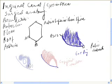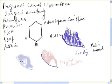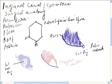The posterior boundary is formed by the transversalis fascia, and there is an opening known as the internal ring. This internal ring, also called the deep ring, is located midway between the anterior superior iliac spine and the pubic tubercle. Behind the transversalis fascia, more posteriorly, lies the peritoneum.